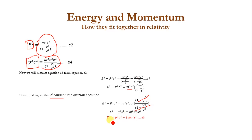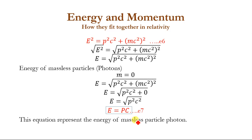Eventually the equation becomes E² = P²c² + (mc²)². This equation, which we have derived, relates the energy, momentum, and mass of a particle in relativity. We have successfully fitted together energy, momentum, and mass.